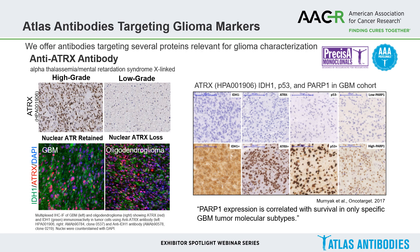Atlas Antibodies offers antibodies targeting several proteins relevant for glioma characterization, most notably ATRX and IDH1. ATRX is most often used to distinguish between low-grade and high-grade gliomas. IDH1 in green, ATRX in red, and DAPI nuclear counterstain in blue is shown here via multiplexing IF in glioblastoma and oligodendroglioma tumors, which, in my opinion, if available 20 years ago, could have helped avoid the astrocytoma misclassification.